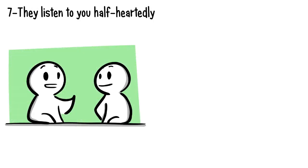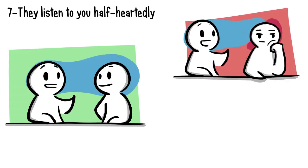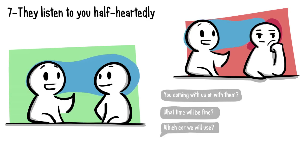Number seven: they listen to you half-heartedly. When we care about someone, we usually do our best to listen to what they say. But if someone is only listening to half of your story and zones out for the rest of it, it's clear they just aren't that invested in you. Other indicators include scanning over your messages instead of fully reading them, giving you only half the answers you need.